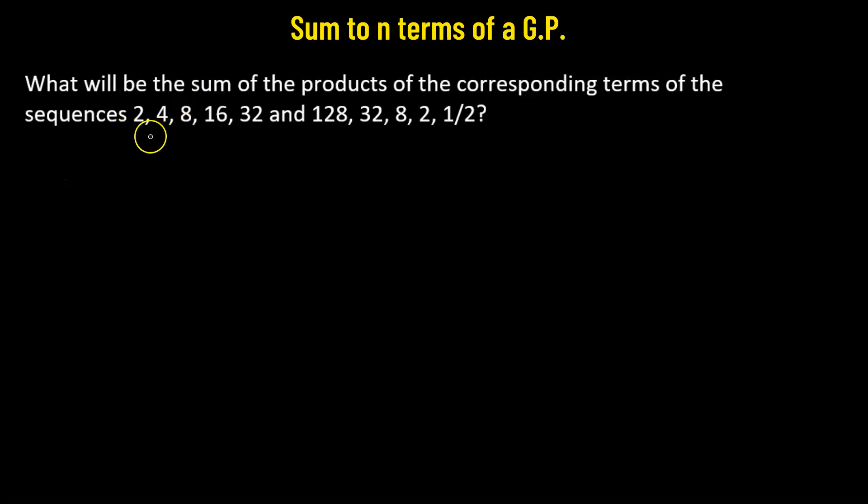In this problem, we are provided with two geometric progressions. One is 2, 4, 8, 16, 32, and the other one is 128, 32, 8, 2, and 1 half.